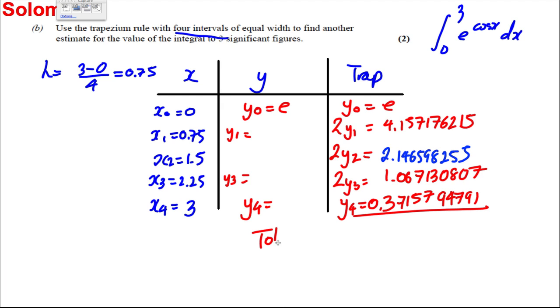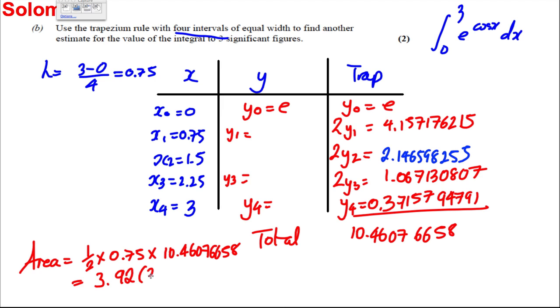I'm going to add this up. And when I do that, I'm going to get myself 10.46076658. And so my area, my approximation for the area, is a half times the H, which is 0.75, multiplied by 10.46076658. Do that on the calculator, and I get myself 3.92 to three significant figures.